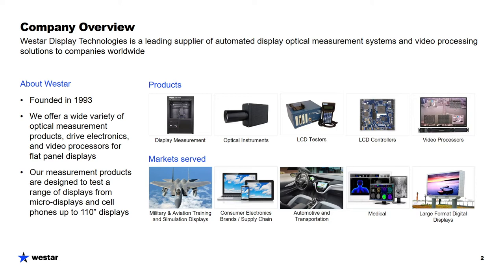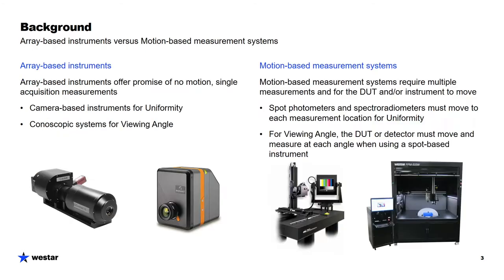Our display measurement systems cover the range from micro displays and cell phones up to 110-inch displays. For today's discussion, a little bit of background on motion-based versus array-based instruments and systems. Array-based instruments are instruments like camera-based instruments for uniformity, also known as video photometers or uniformity analyzers, and conoscopic systems for viewing angle. On the motion-based side, motion-based measurement systems require moving a display and typically use a spot photometer or spectroradiometer which must be moved for each measurement.